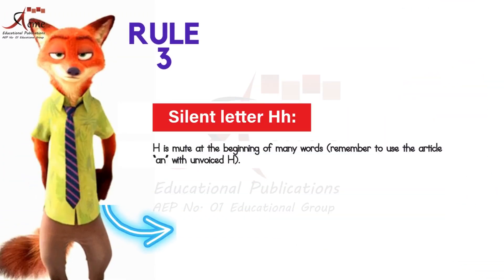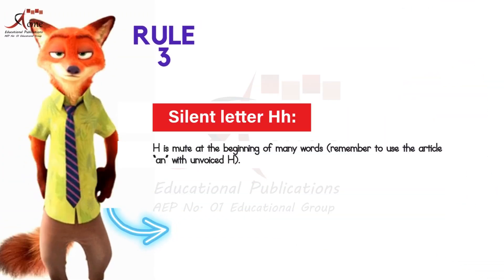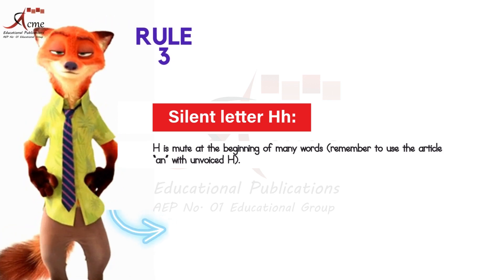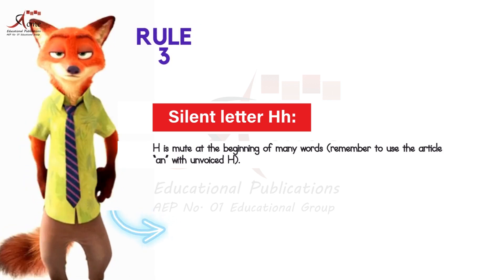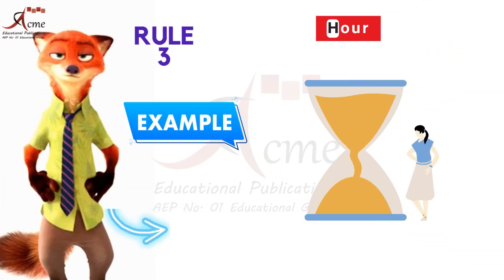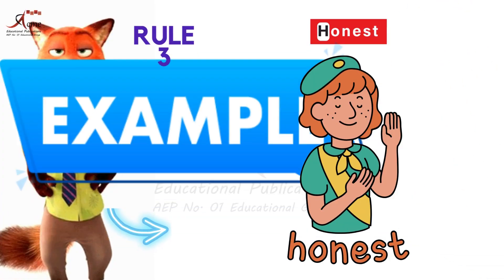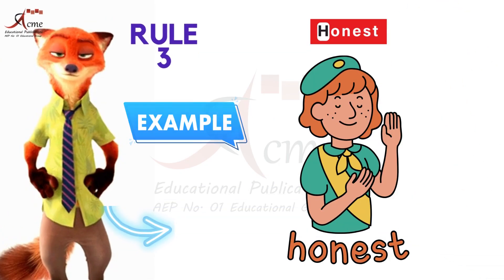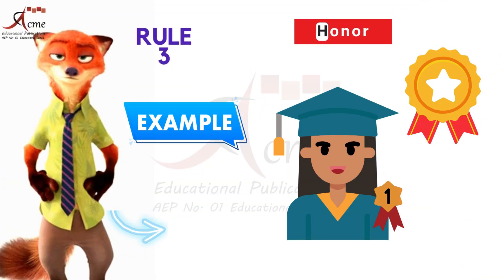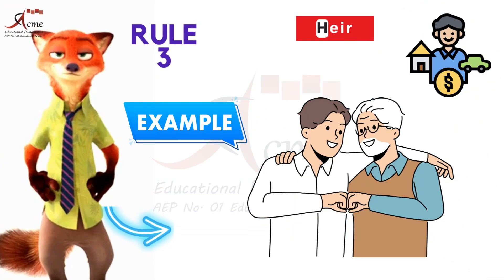H is mute at the beginning of many words. Remember to use the article 'an' with unvoiced H. Example: Hour, Honest, Honor, Heir.